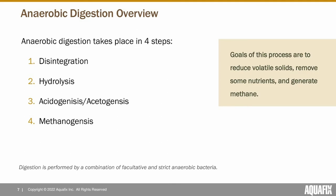After disintegration, bacteria in anaerobic digesters produce exoenzymes to hydrolyze fine particles into a soluble form that can be consumed by bacteria. After that, we have acidogenesis and acetogenesis, which are sometimes considered separate steps. We'll lump them together as one category: taking volatile acids and other organic substances and converting them gradually into acetic acid or acetate. The final step is methanogenesis, where methanogens primarily use acetate, but also carbon dioxide and hydrogen, to produce methane.